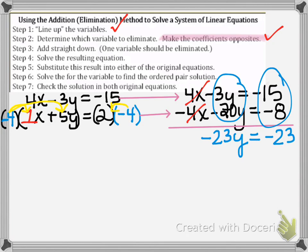And here's where we eliminate the x's. If I were to add 4x plus negative 4x, I would have 0x. That's why I multiplied the bottom equation by negative 4 because now my x terms eliminate. And all I have to do is solve this equation negative 23y equals negative 23.